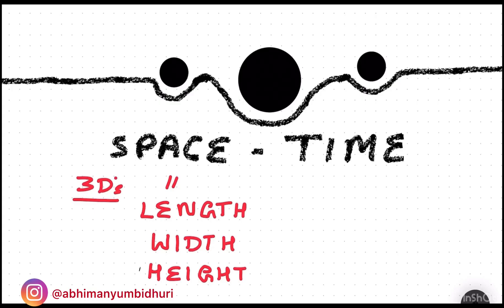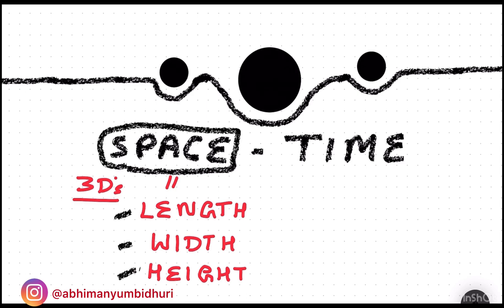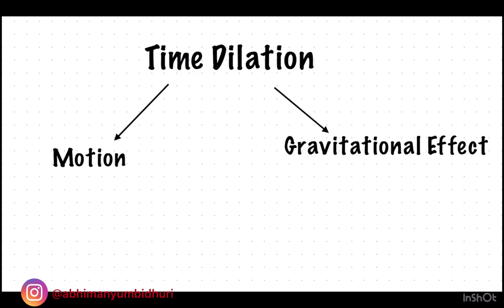Any mass over the fabric of space-time will create distortions not only in the three dimensions of space — that is length, width, and height — but also in time, which is considered the fourth dimension. This is referred to as time dilation, which can take place either through relative motion through space or through gravitational effect.